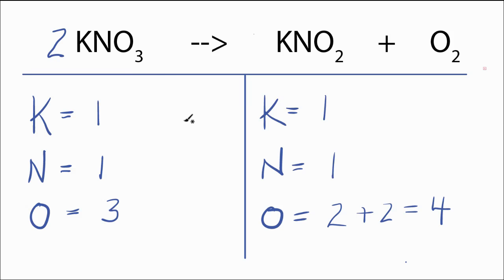If I multiply this potassium nitrate by two, I have two times the one, that gives me two potassiums. Two times the one, that gives me two nitrogens. And then two times the three here, that'll give me six oxygens.